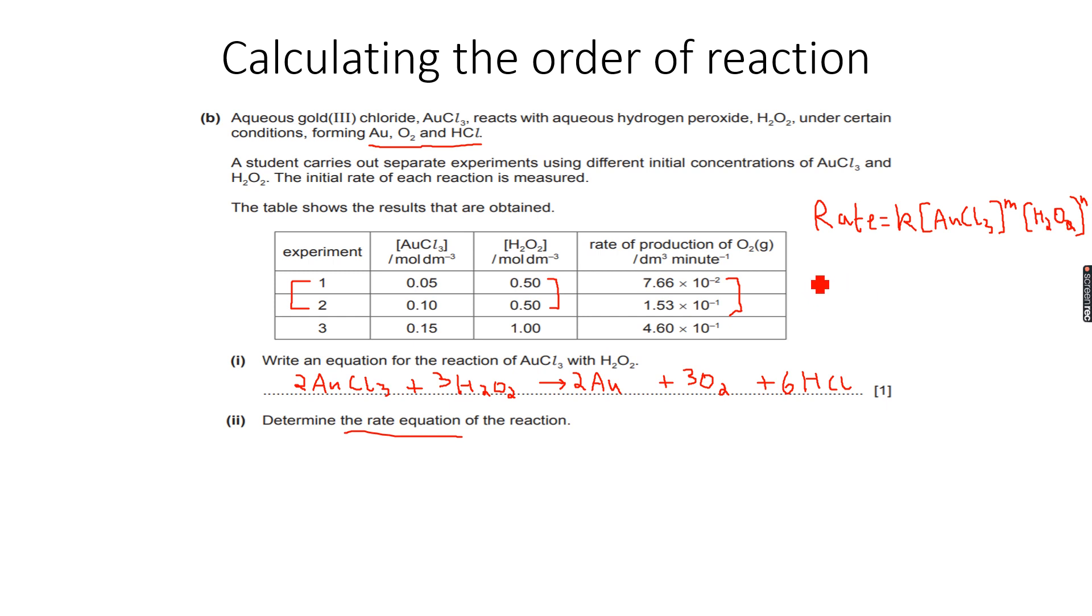If I rearrange this equation, I can also write this as rate over concentration of AuCl3 to the power of M equals K times the concentration of H2O2 to the power of N.